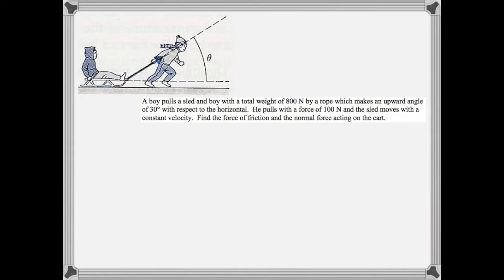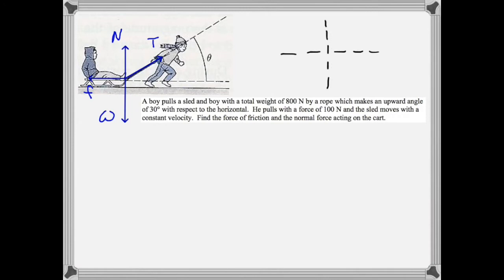In this case, we have the force of gravity or the weight. Then we have the tension in the rope. There is a normal force. And then finally we have the force of friction. Now we'll draw our component diagram. We'll make our horizontal and vertical axes and we'll add the weight vector, the normal force, and the frictional force, all of which already happen to lie along one axis or the other.